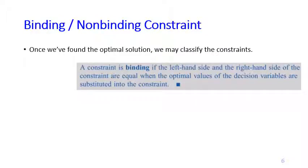Now, once we found the optimal solution, we may classify the constraint into binding constraint or non-binding constraint. Let's take a look at the binding constraint first. So a constraint is binding if the left-hand side and the right-hand side are equal when we plug in the optimal values.